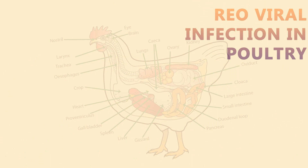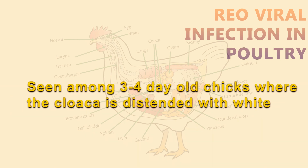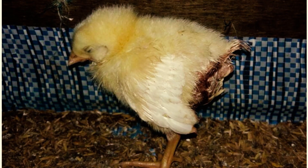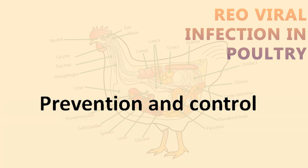The fourth disease condition is Cloacal Pasting, otherwise known as Pasty Vent Disease. In this condition, the cloaca will be distended with white excreta, particularly around the vent feathers there will be soiled fecal material. This condition persists for 3 to 4 days and mortality will be around 3 to 5%.